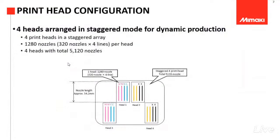Lalu untuk print head, print head-nya ini di-atur secara stagger. Jadi ada empat print head yang di-atur secara stagger. Ini berbeda supaya nanti sapuannya lebih besar dan produktivitasnya lebih meningkat. Jadi sapuan besar, otomatis print speed-nya lebih baik.